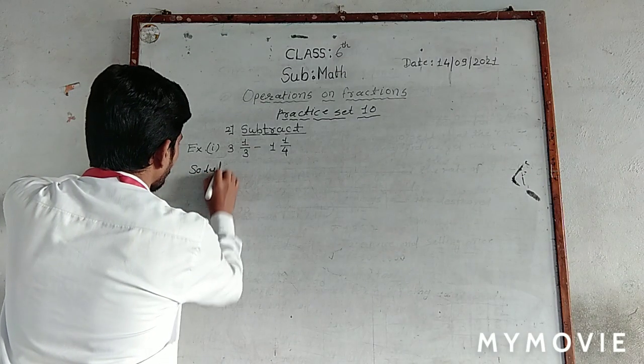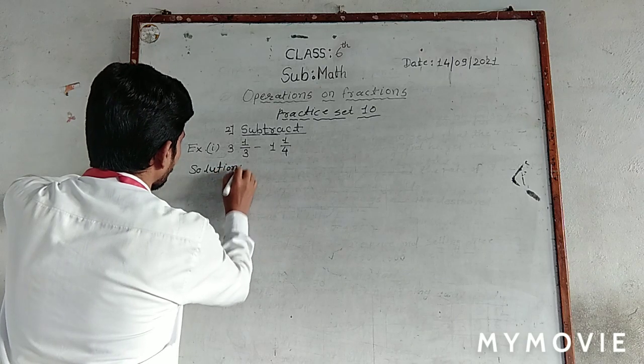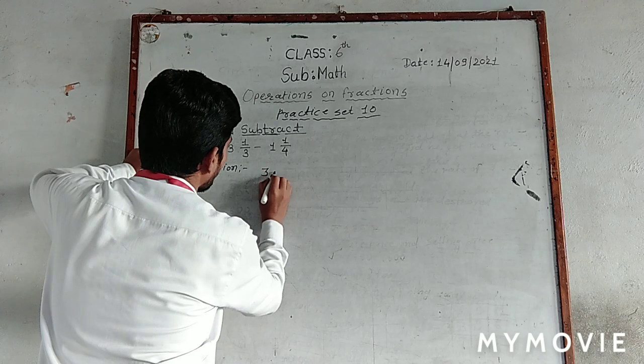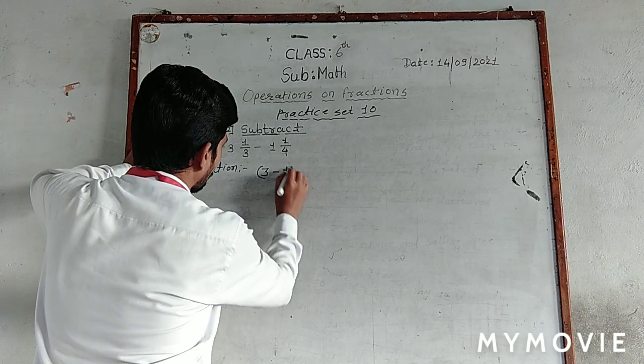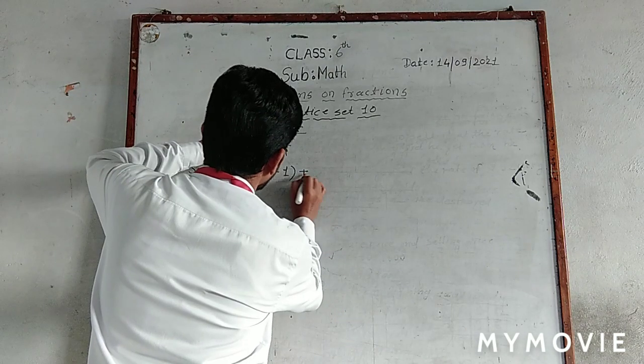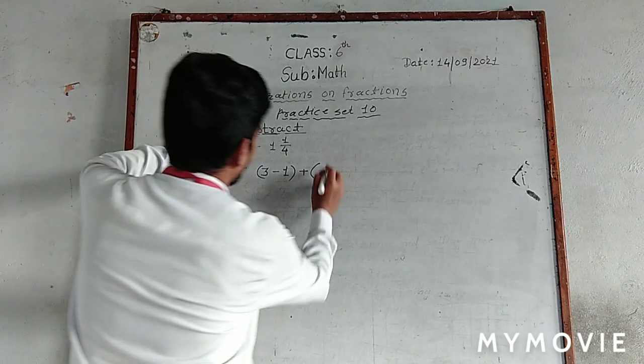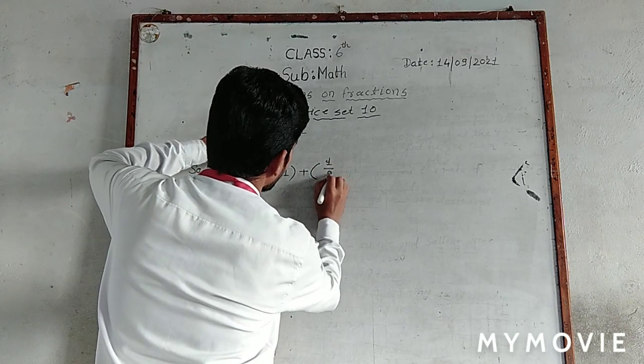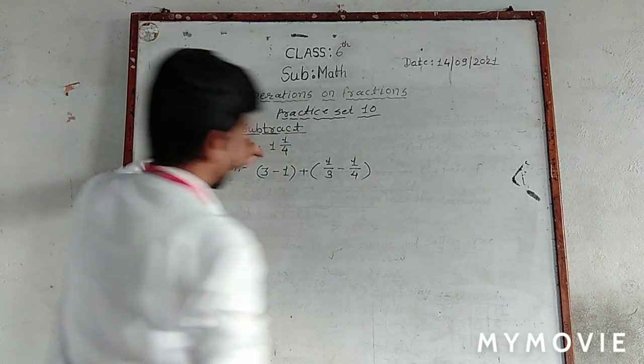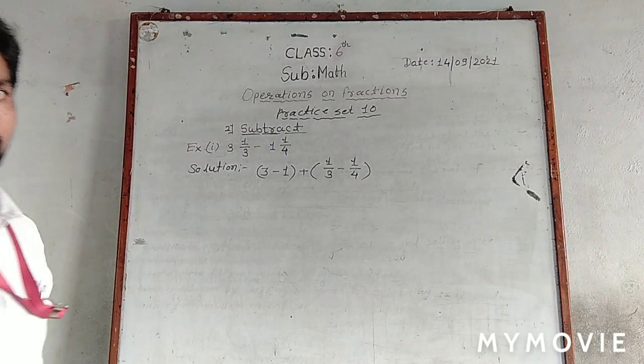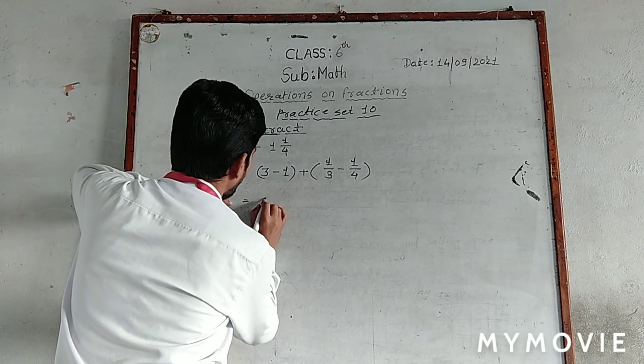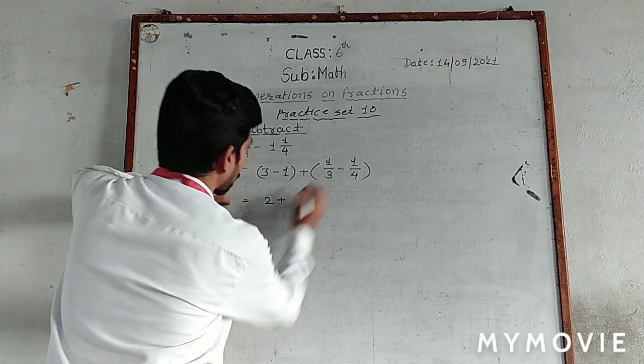We will separate the integers from the fractions. 3 minus 1 integer equals 2, plus the fraction subtraction. So we have 2 plus the fraction part.